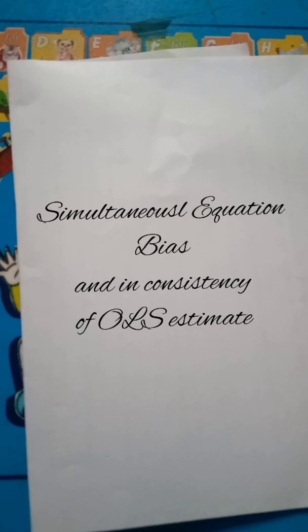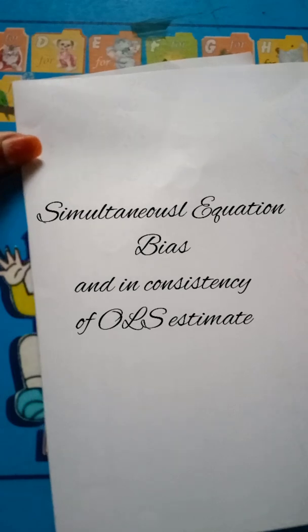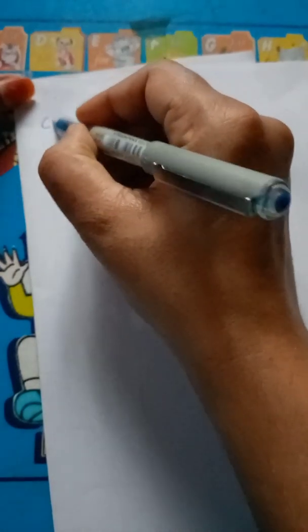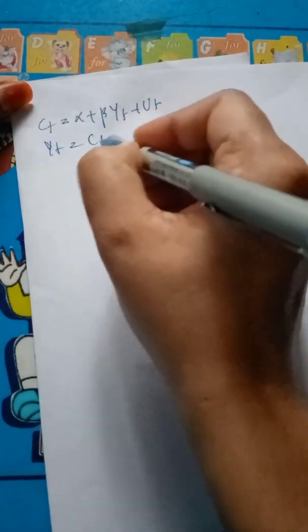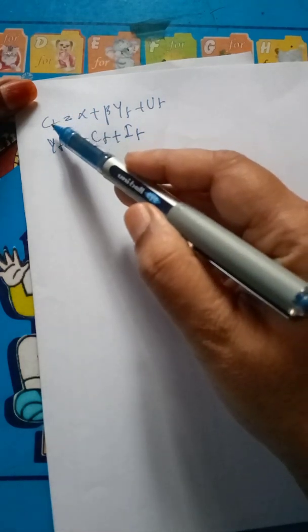Let us prove how this happens in a simultaneous equation model when we apply OLS. Consider a consumption-income determination model: Ct = alpha + beta*Yt + Ut is the consumption function, where consumption is a function of income. And income is determined as Yt = Ct + It. This is the Keynesian consumption-income determination model.